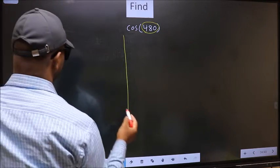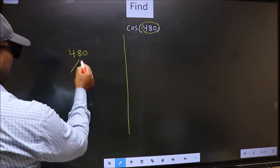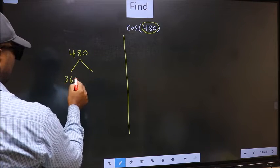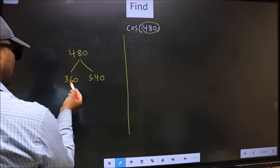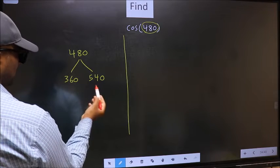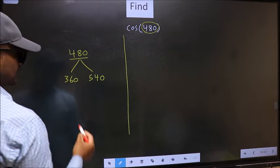What I mean is 480 lies between 360 and 540. This is 180×2 and this is 180×3. Between these two numbers 480 lies.